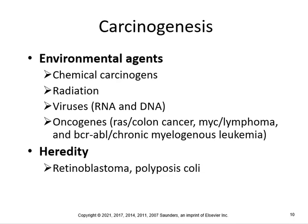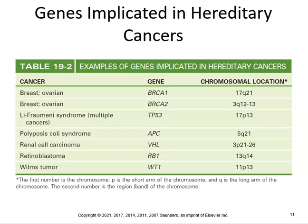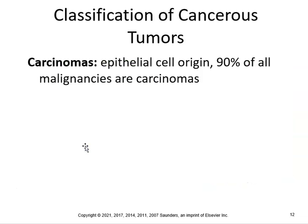Oncogenes are basically pieces of normal DNA that cause normal cells to become malignant when a mutation occurs. Genes implicated in hereditary cancers include breast and ovarian BRCA1 — you can actually get tested for this to see your chances. Just because you have the gene doesn't mean you'll automatically get cancer. Sometimes too much information isn't helpful. You can do genetic screening for yourself or a family member.